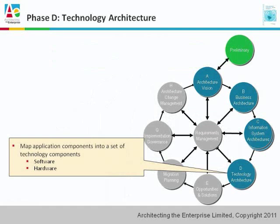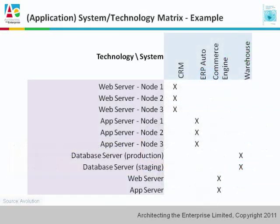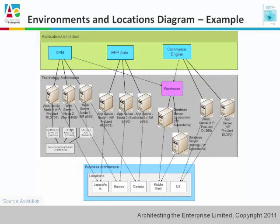In the technology architecture, we might have diagrams like the system-to-technology matrix, where we have our applications across the top, our various infrastructure elements down the side, and in the cells, how they relate to each other. The environments and locations diagram shows the relationship between the applications in blue boxes at the top, the locations in the business architecture at the bottom, and the various pieces of infrastructure in the middle.